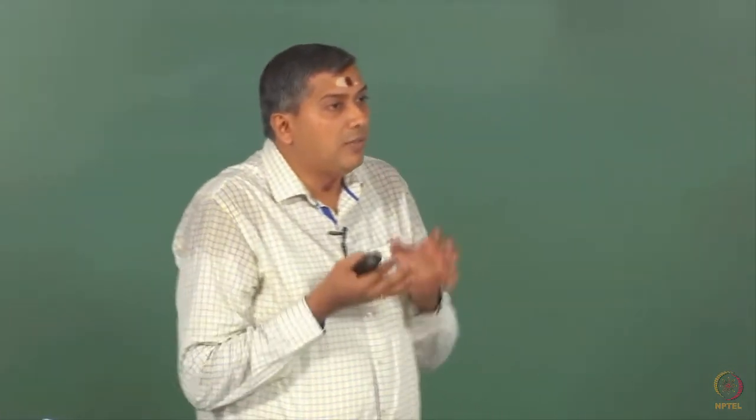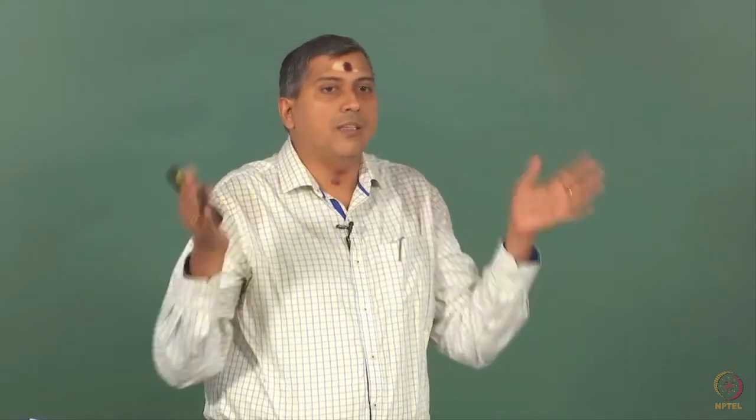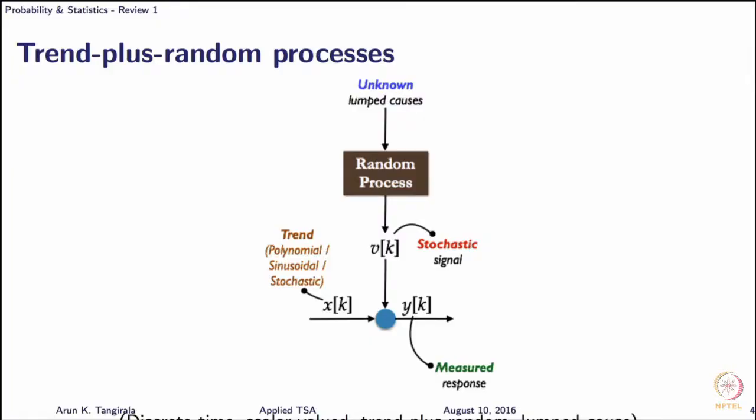In situations where causes are known, the known causes may be unable to explain everything. So you will still have to explain a part of the effect using some other model, and that model is what we call a time series model. There is always going to be effects of unmeasured disturbances and sensor noise. Even if you do not have unmeasured disturbances, you will invariably have sensor noise corrupting your data. So there is no escape to that channel which is labeled as a random process. We now move from the system identification framework to the time series framework, where we have thrown away the cause.